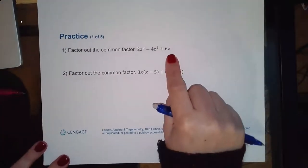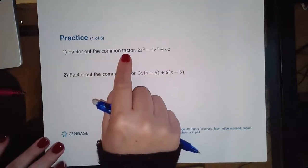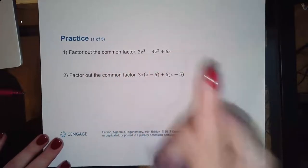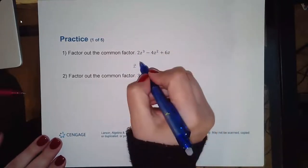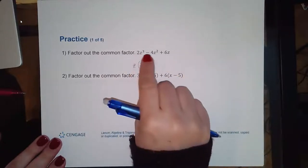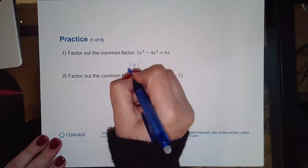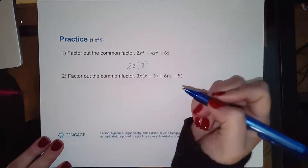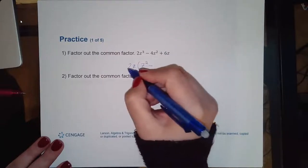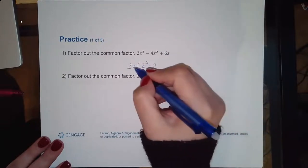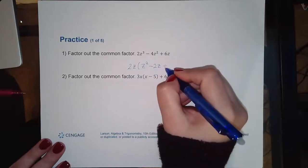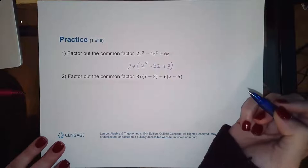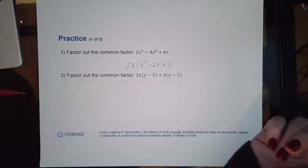For this problem, it just wants me to factor out the common factor. I notice all three terms have a z, and all have a factor of two, so I factor out 2z. Then: 2z times z² gives 2z³, minus 2z times 2z gives 4z², plus 2z times 3 gives 6z. So the result is 2z(z² - 2z + 3), and that's all it asked for on the first one.